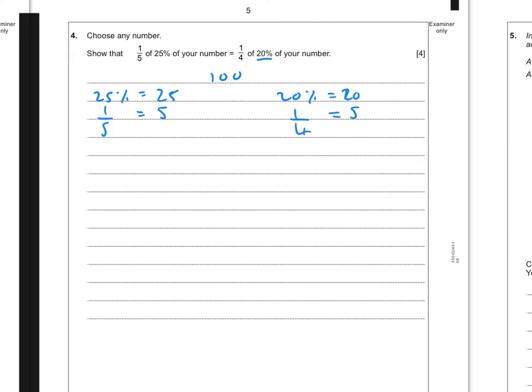So we've shown that it's the same. You can use any number as long as you show it nice and clearly. Or you could have actually found, there's quite a clever other way you could have done this, is by saying, well, what is one-fifth of 25%? Well, that's 5%. And one-quarter of 20% is also 5%. So you could have shown it that way too.